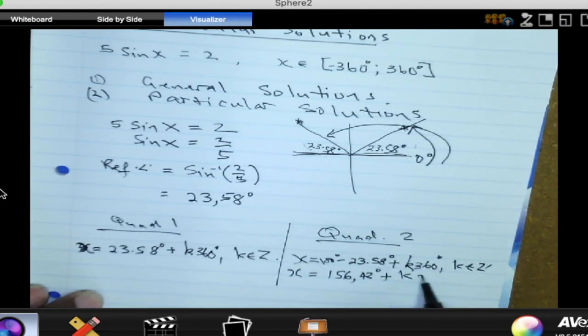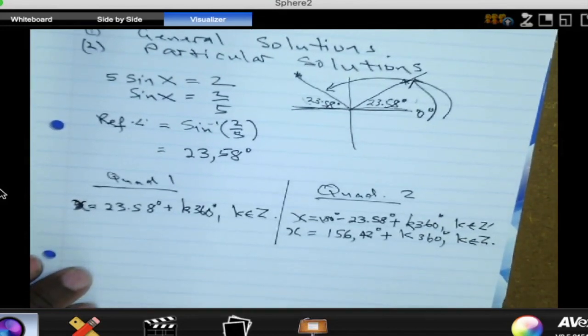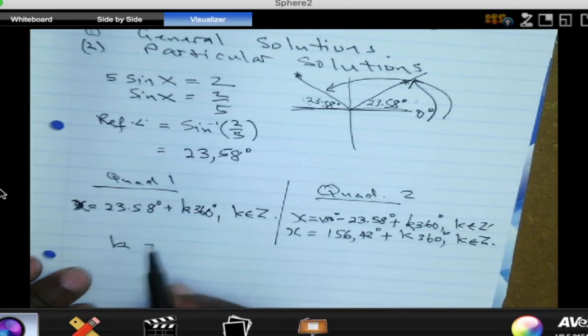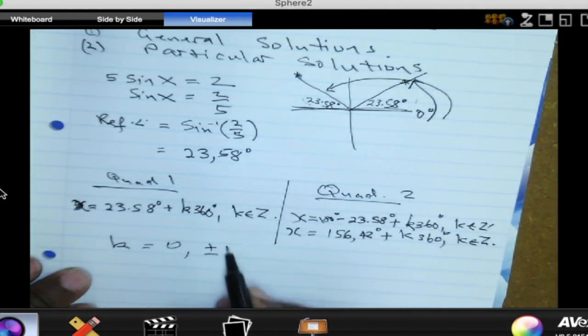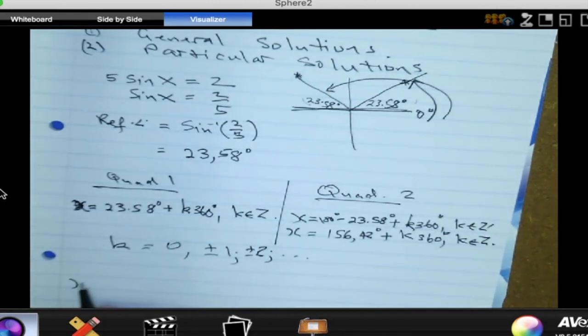So 156.42 plus K times 360 where K is an integer. Okay, so we have our two general solutions, but we need to go further than that. We are looking for the particular solutions. K is an integer means K can be equal to 0, 1 or minus 1, 2 or minus 2, and so on.